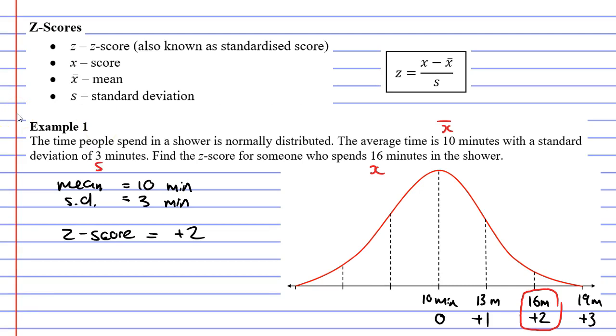Let's substitute these values into our formula: z = (x - x̄)/s. x, which is our score, was 16. So we write 16 at the top and subtract our mean, which was 10. Then we put our standard deviation, 3, at the bottom.